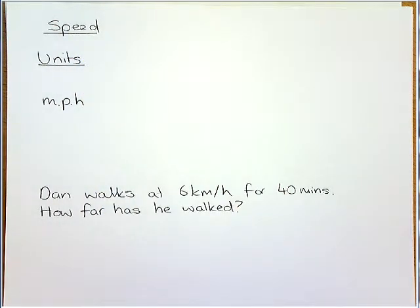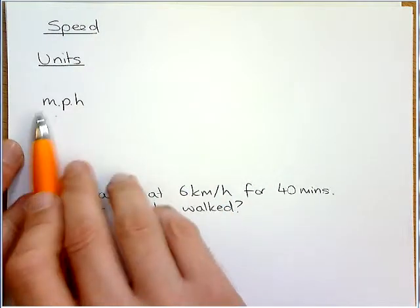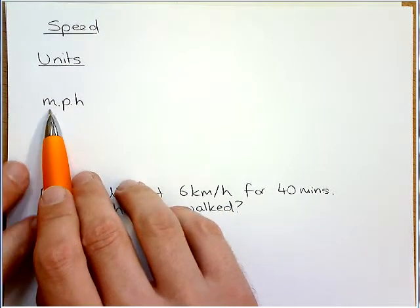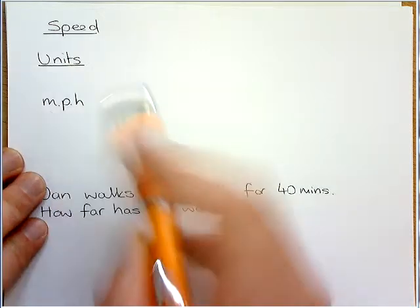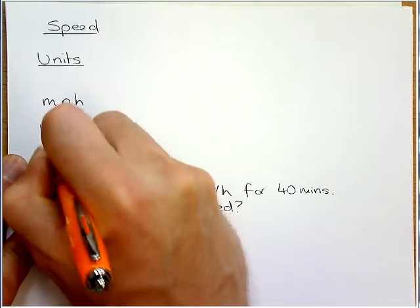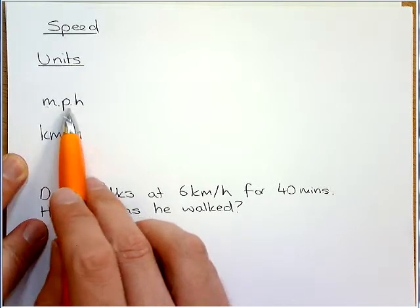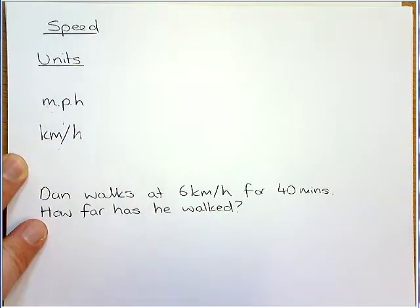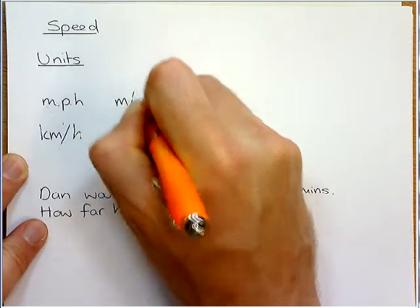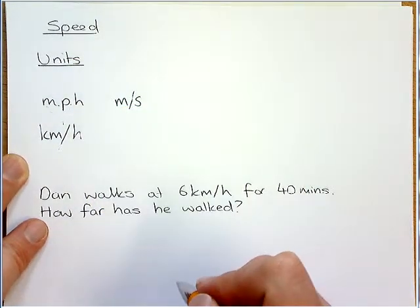Now, it's very important we understand the units that we could be asked. So, if we're talking about miles, we report the speed in miles per hour, just the same as kilometers per hour. Sometimes we use this forward slash to say per. For some reason, miles per hour, we actually use a P. Now, the other speeds we have are meters per second, and that's pretty much it.